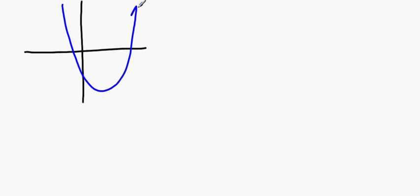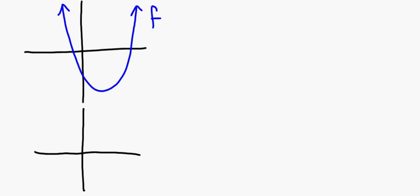Alright friends, so let's talk about how to graph a derivative based on a graph of a function. Let's talk about what that looks like in this screencast. So let's imagine, just for argument's sake, that you have some function and it looks like this. This is your function. And we're interested in drawing on these axes a graph of what its derivative might look like.